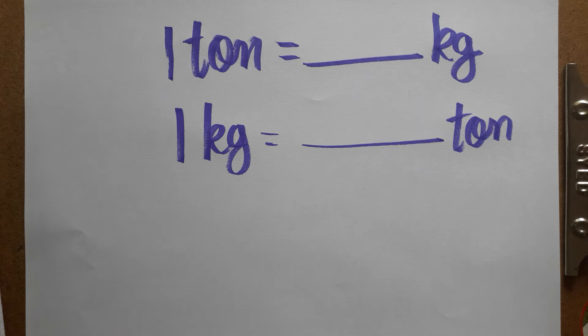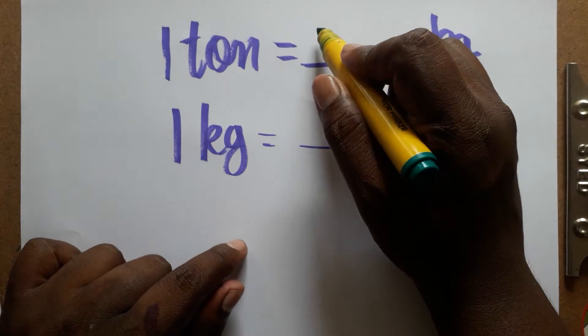Today we are going to learn 1 ton equals how many kg, and 1 kg equals how many tons. If you like my channel please subscribe. This one is very easy. 1 ton is 1000 kg.